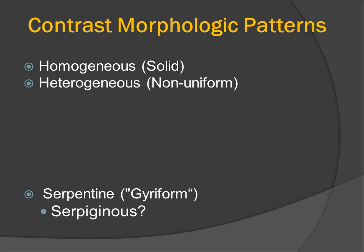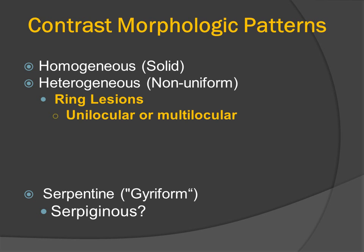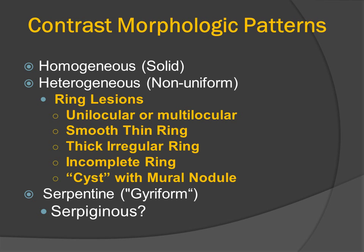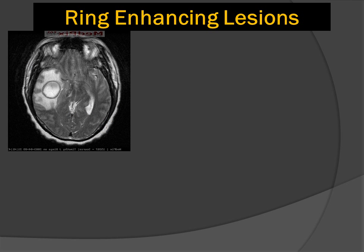There are many different patterns of contrast morphology. We can have homogeneous enhancement, heterogeneous enhancement, and superficial or serpentine enhancement. We can also have ring lesions. They may be unilocular or multilocular, smooth and thin, or thick and irregular. There can be an incomplete ring or rim of enhancement, and we can also have a cyst with a mural nodule.